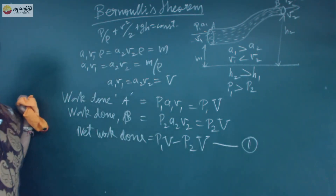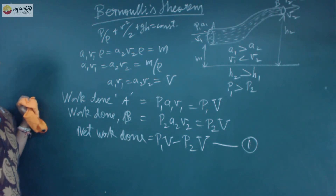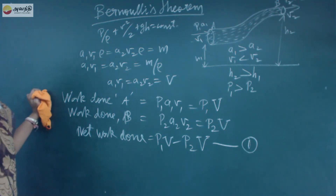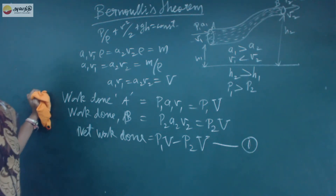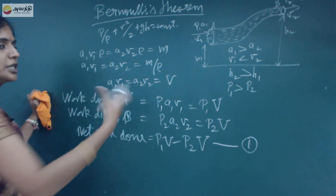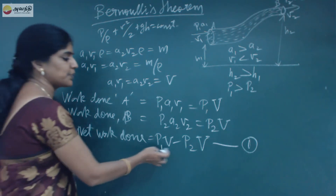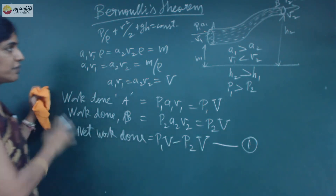The net work done is given by P1V minus P2V. This net work done represents the increase in pressure energy, which we have written as P1V minus P2V.